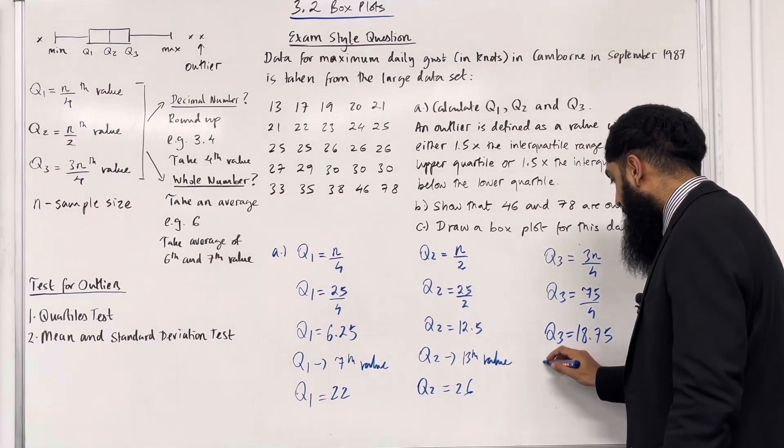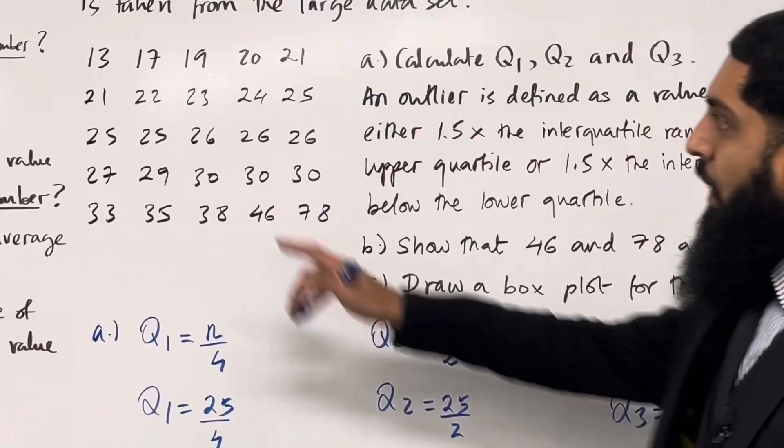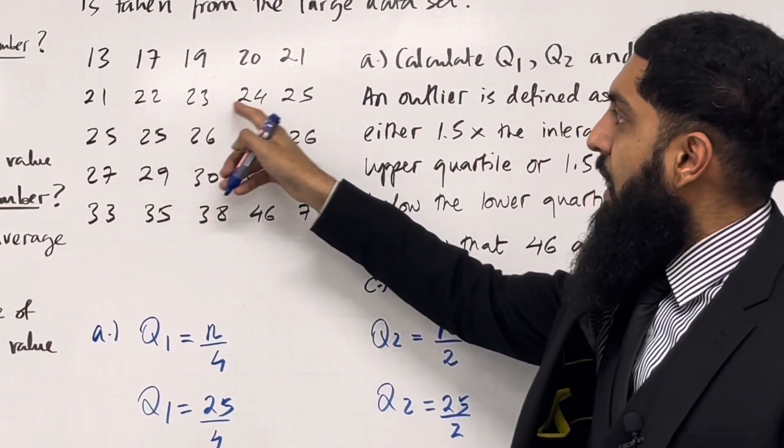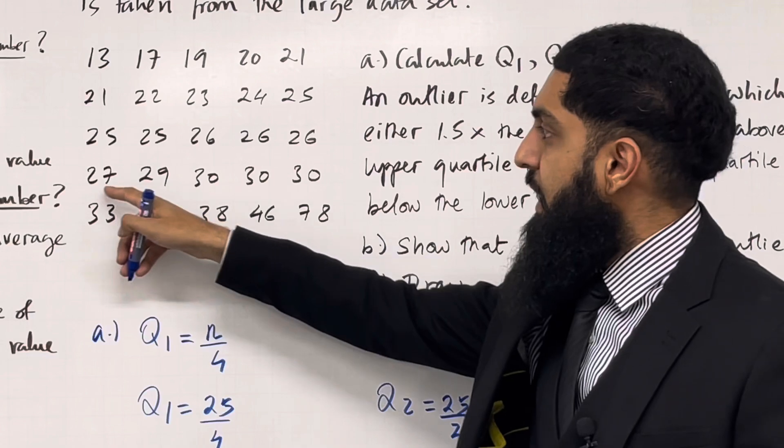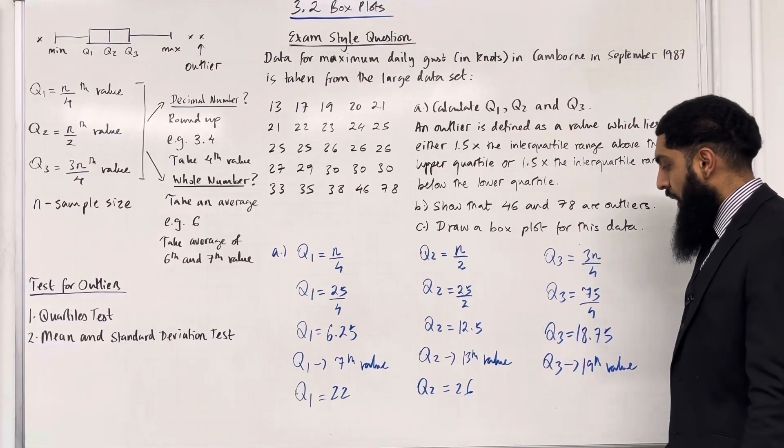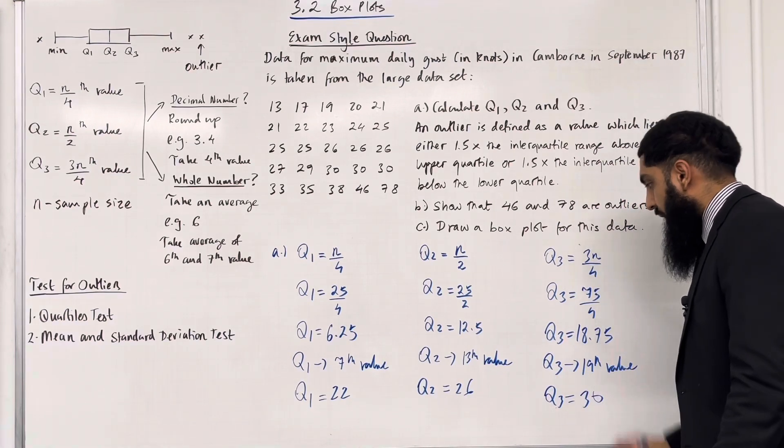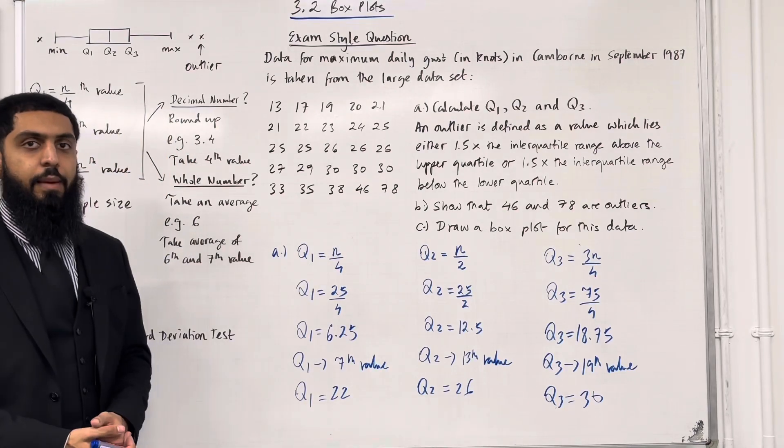For the upper quartile Q3, we take the 19th value. Counting to the 19th value, the 19th data value is 30. Hence the upper quartile Q3 equals 30. That completes part A of this exam style question.